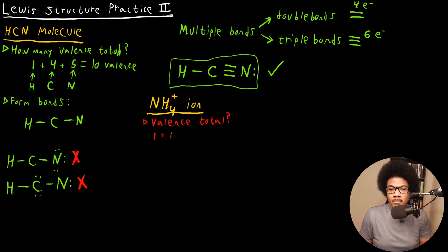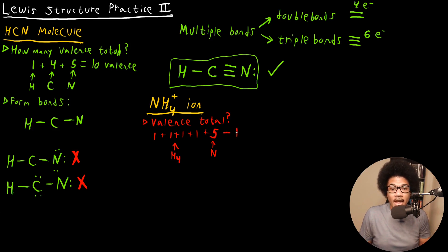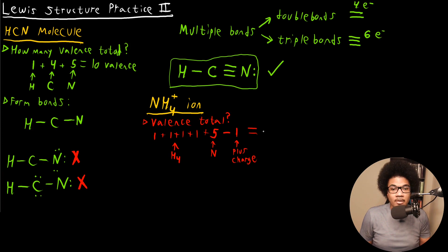We have four hydrogens, so one plus one plus one plus one from the four hydrogens. Nitrogen contributes five valence electrons. Now, since we have a cation, that means we have one fewer electron than protons, so we subtract one electron to account for that positive charge. If it were an anion, you'd add one electron. Adding five plus four gives nine, then subtracting one gives us eight total valence electrons.